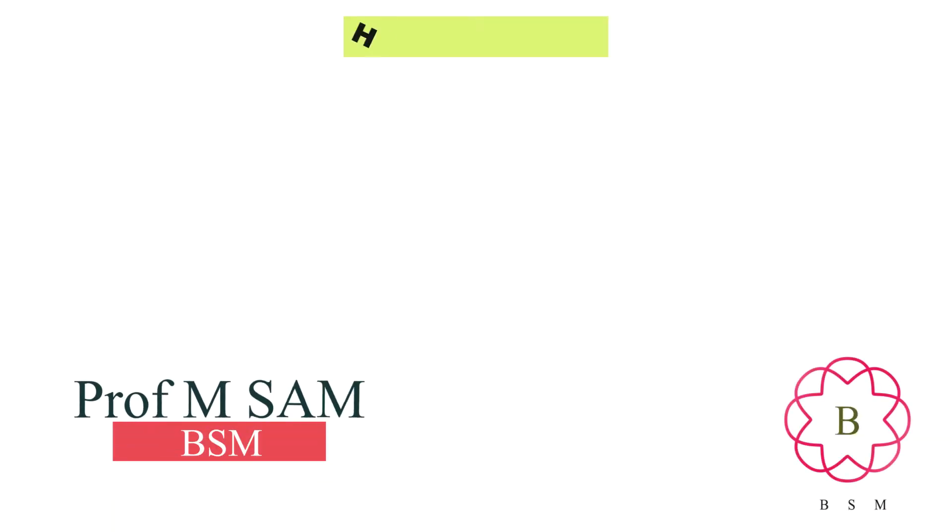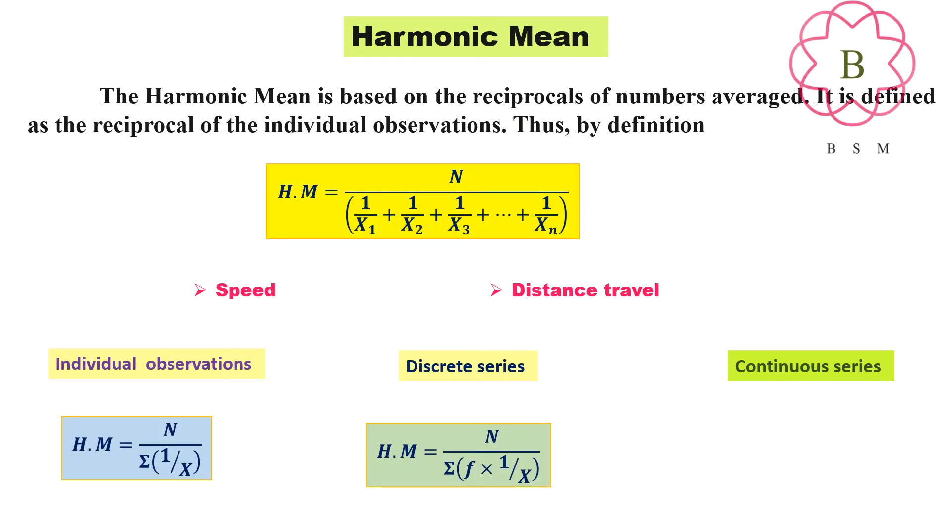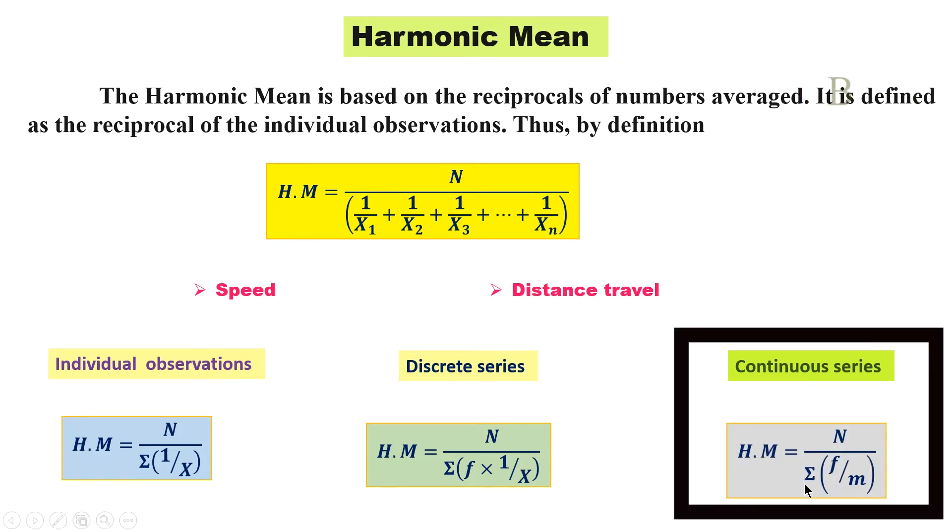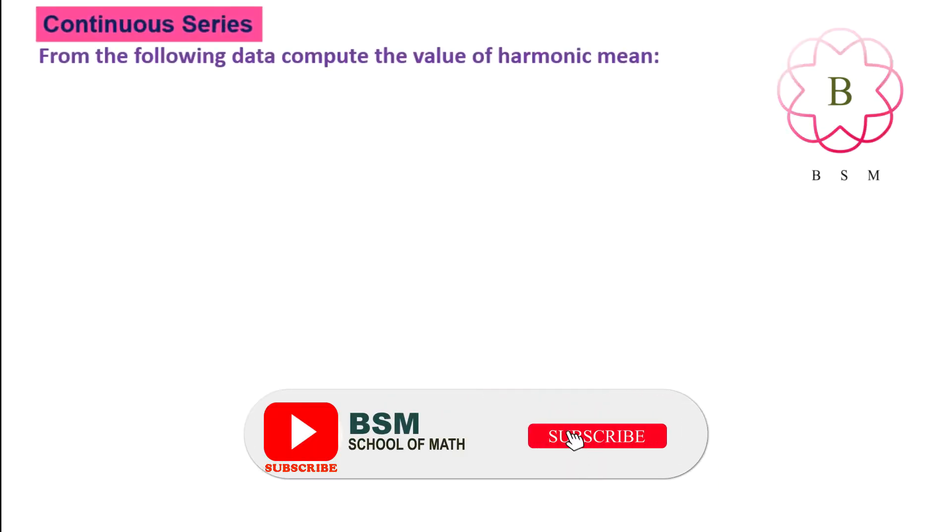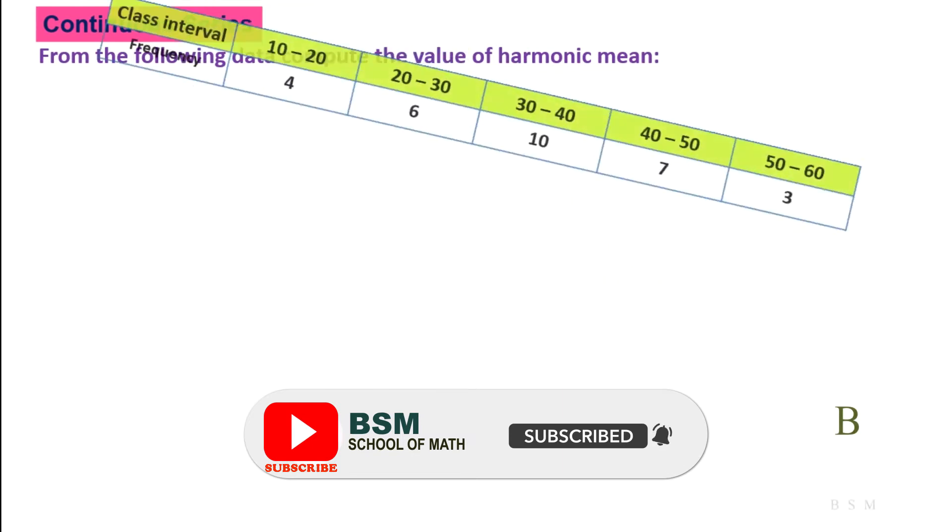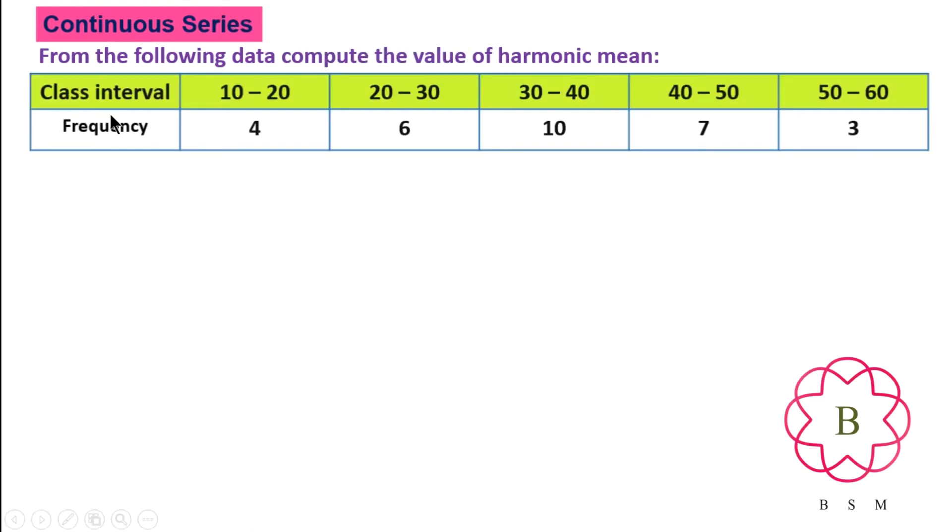Hello and welcome, this is Sam from BSM School of Math. Harmonic mean for continuous series: H.M = N divided by sigma of F divided by M. So class interval, class interval mark, and the frequency.